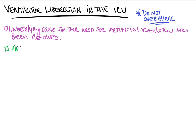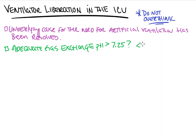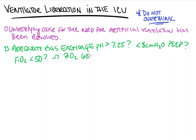Next, we need to ensure there is adequate gas exchange — meaning are they oxygenating appropriately with an appropriate CO2? Can they tolerate less than 8 centimeters H2O of PEEP? Is their FiO2 requirement less than 50%? And with all of these settings, is their PaO2 at least 60 millimeters of mercury? If so, we've passed another one of our tests. If not, there is some underlying pathology inhibiting the patient from adequately exchanging gases.